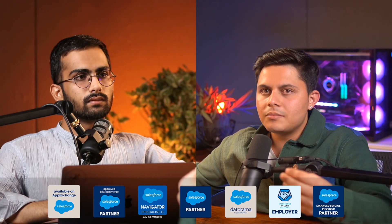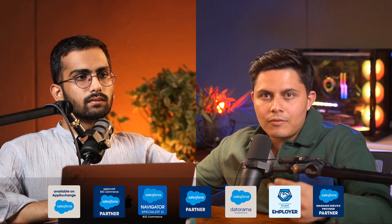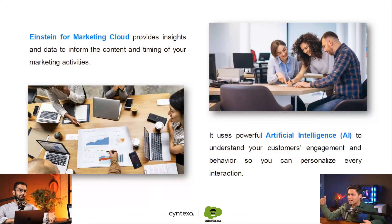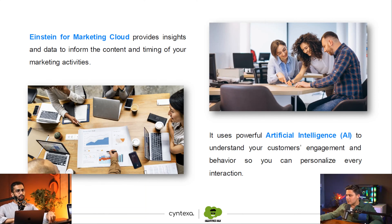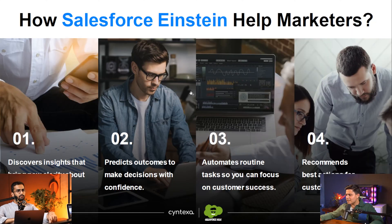Einstein for Marketing Cloud automates your job of looking into reports or dashboards and figuring out what went wrong and what went right, and trying to replicate that — it'll do all of that for you, based on the data it already has.